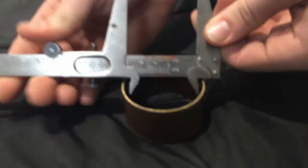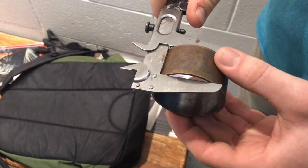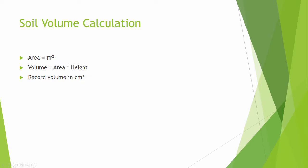Use a caliper or ruler to measure the inside diameter and the height of the ring. Use pi r squared to find the cross sectional area of the ring and multiply that value by the height of the ring to get the soil volume. Record this volume in centimeters cubed.